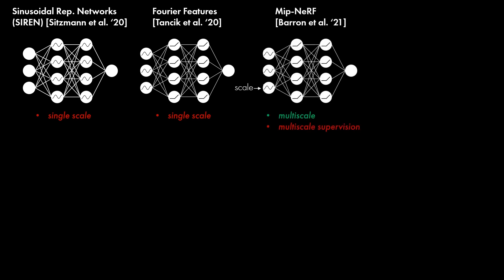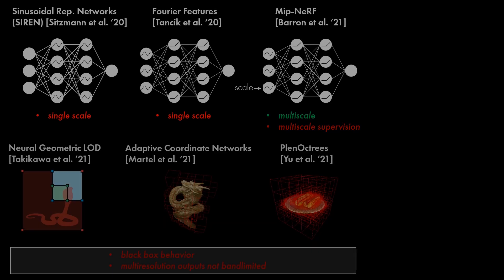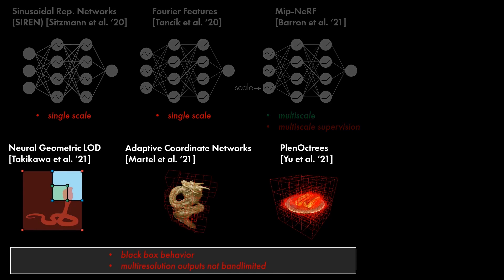Recently, the MIPNERF architecture introduced a scale-aware coordinate network that allows controlling the output resolution by adjusting the positional encoding and supervising across multiple scales. Other multiscale methods have been proposed for neural rendering and shape representation, for example by storing features in an octree or other hierarchical representations.